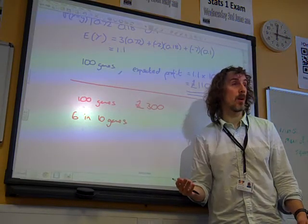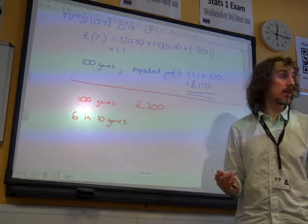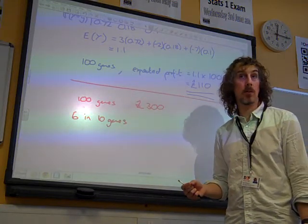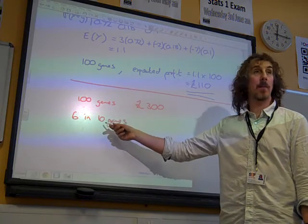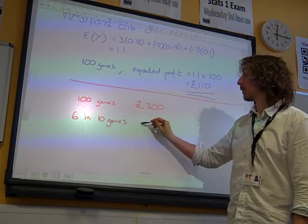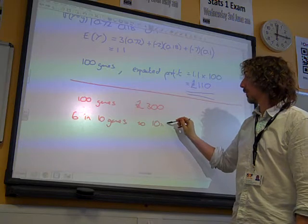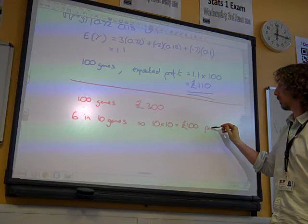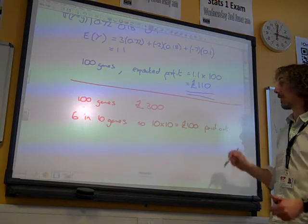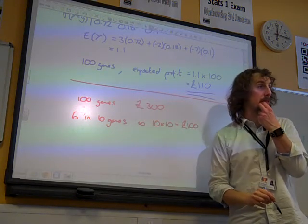That would be right, wouldn't it? Now, every time he gets a 6, he's paying out £10. And it's happening 10 times. So, we'd expect him to pay out £100 for the 6s.